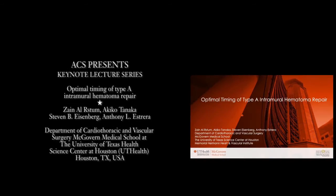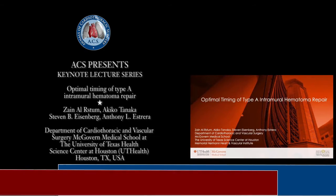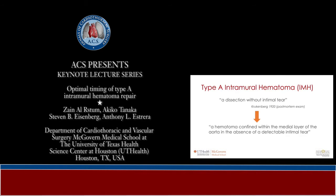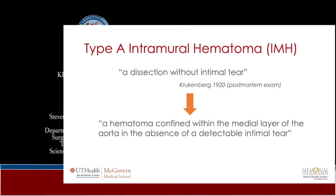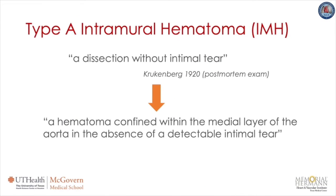We will be talking about optimal timing of type A intramural hematoma repair. Intramural hematoma was first described by Krukenberg in 1920 during a post-mortem exam in which he found a dissection without an intimal tear. This was later adopted and widely accepted as the original term of IMH; however, the definition later evolved.